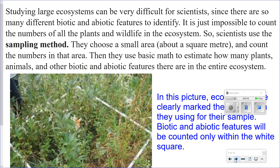Studying large ecosystems can be very difficult for scientists since there are so many different biotic and abiotic features to identify. It is just impossible to count the number of all the plants and wildlife in the ecosystem. So scientists use the sampling method. They choose a small area, about a square meter, and count the numbers in the area. Then they use basic math to estimate how many plants, animals, and other biotic and abiotic features there are in the entire ecosystem.